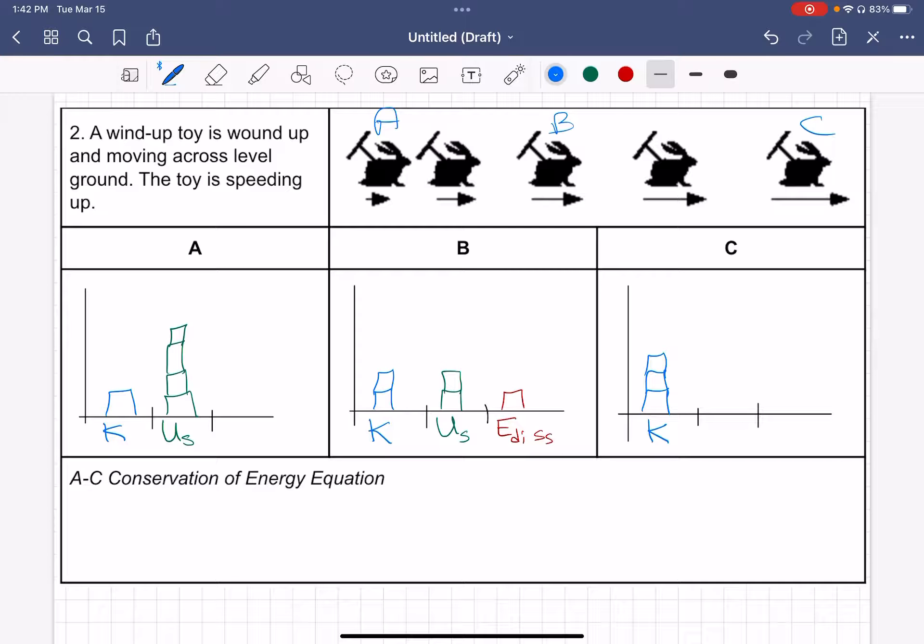So then at C, this toy has sped up even more. So I showed an increase in kinetic energy. It also had a chance to dissipate some more energy. So that edis must have gone up.